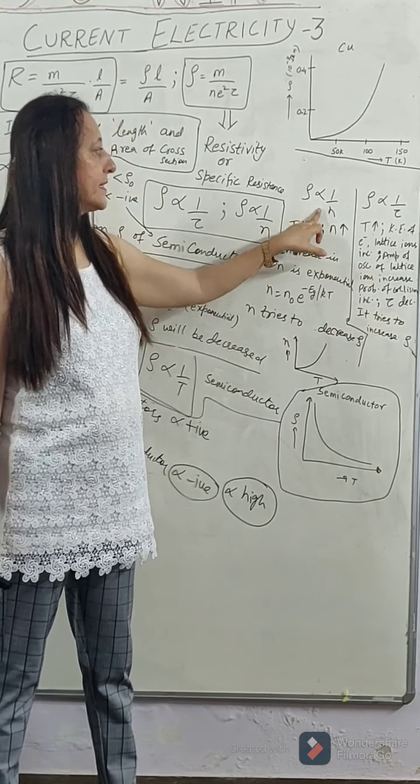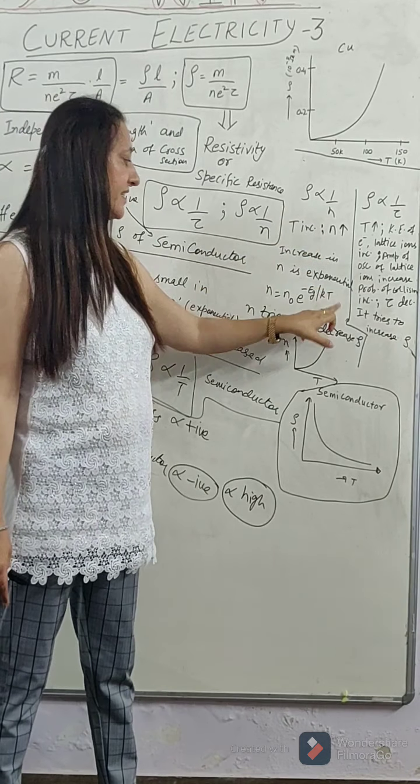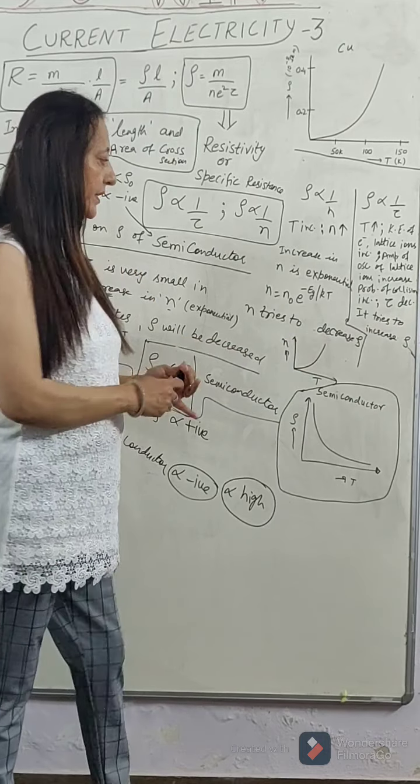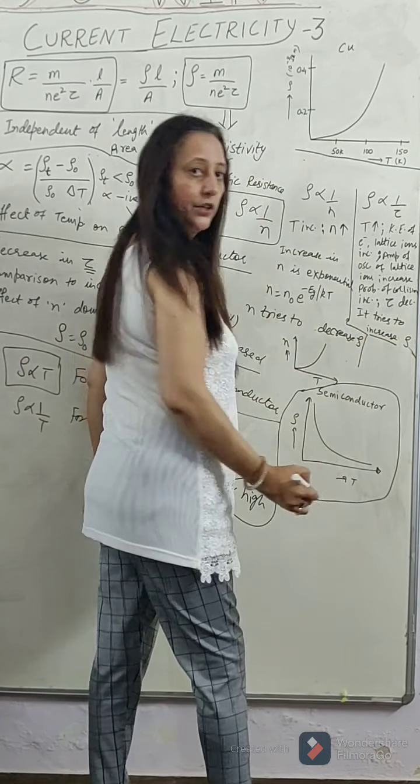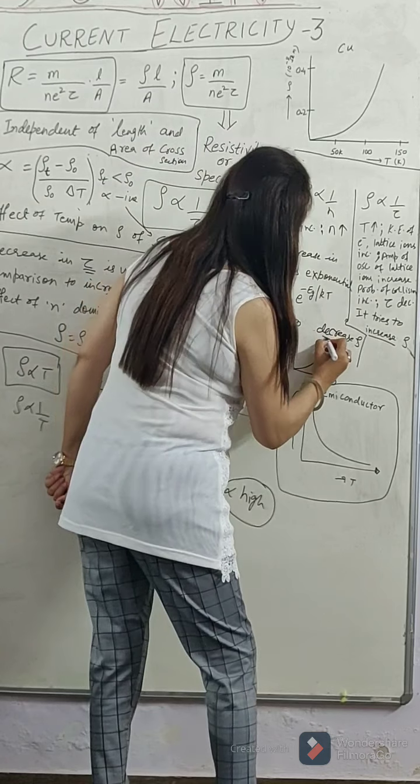And the number density tries to decrease the resistivity. This is very important, because the tau increases and the number density increases.